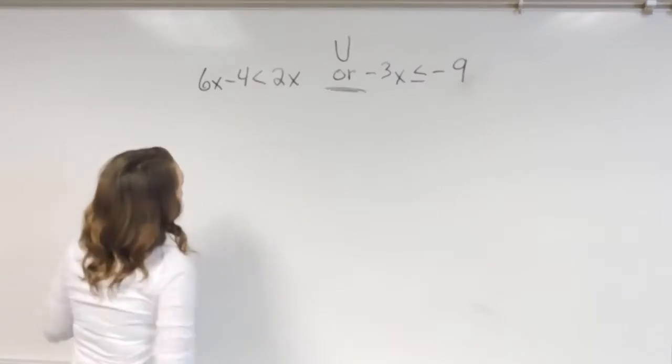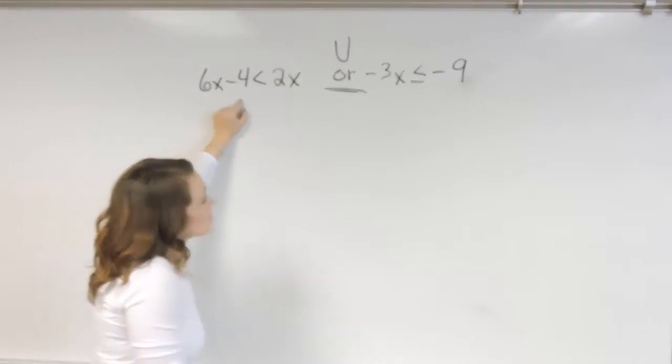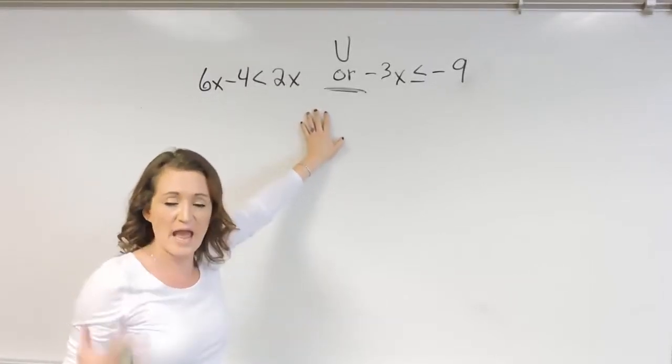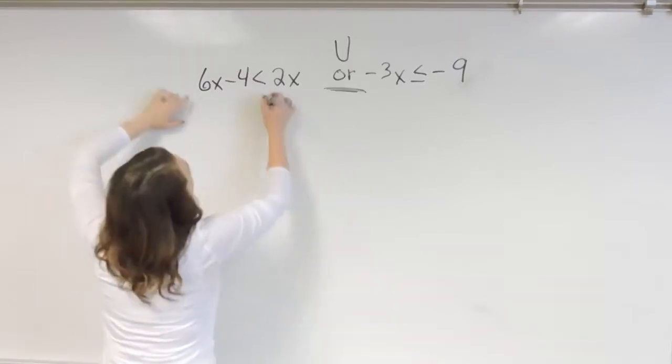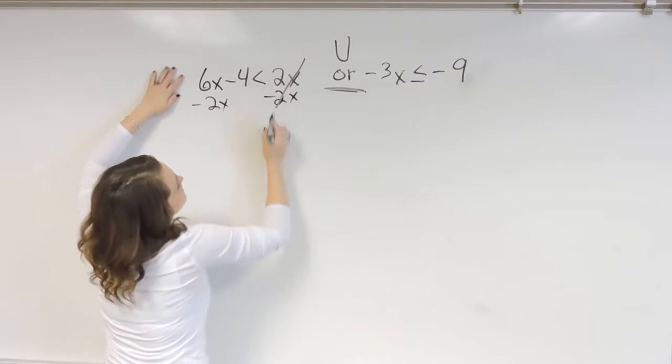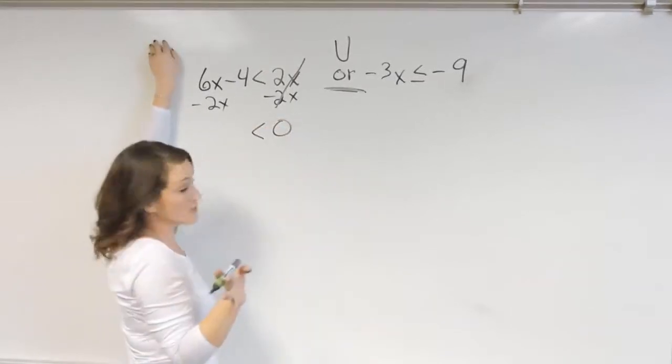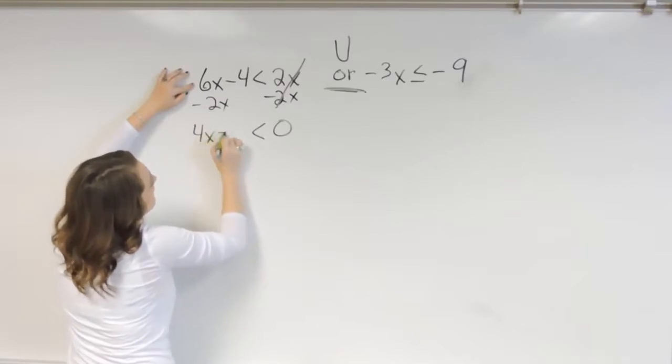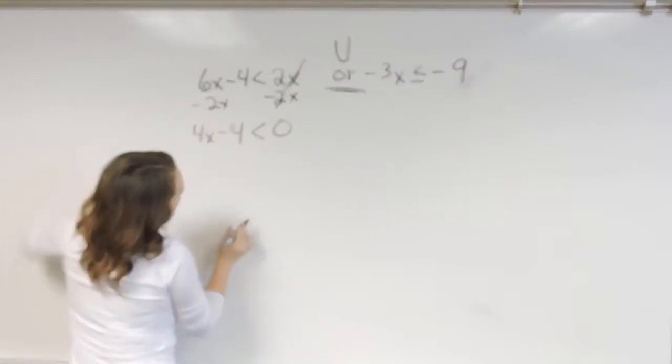So starting with the equation on the left over here, if I'm going to solve this for x, I'm going to work on getting x on the left-hand side because I think when it comes to inequalities, it just makes it easier to read when you already have your variable on the left side. So I'm going to say minus 2x minus 2x. So on the right-hand side I'm going to have a zero for right now.